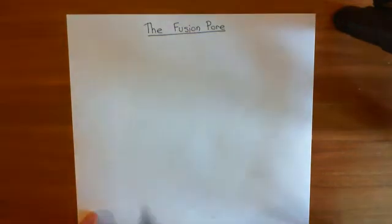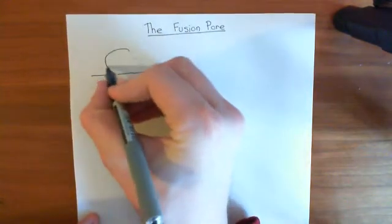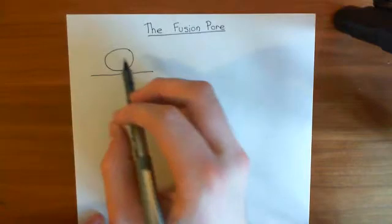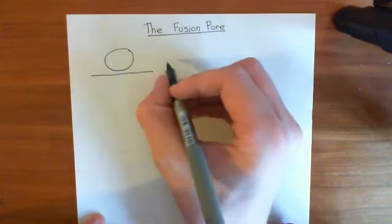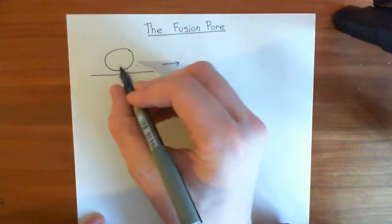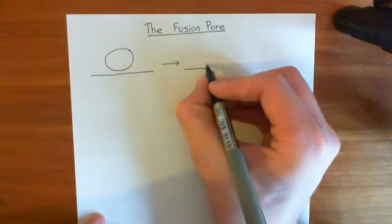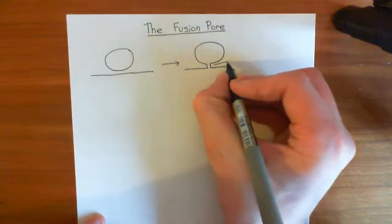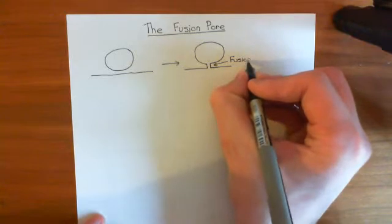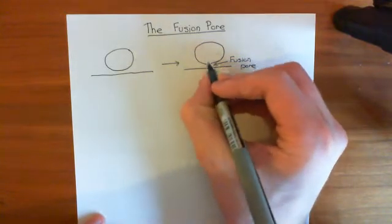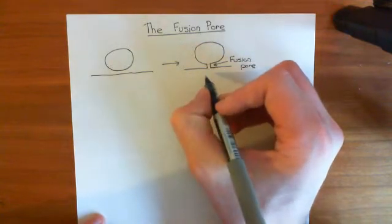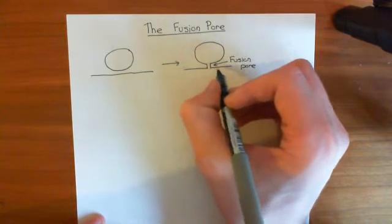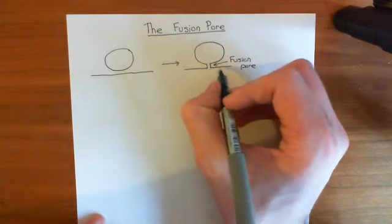So what is the fusion pore? We have our presynaptic membrane and a synaptic vesicle docked at the presynaptic membrane. When an action potential arrives in the axon terminal, it causes promotion of the fusion of this synaptic vesicle with the plasma membrane. What we believe happens first is that you form a little tube between the synaptic vesicle and the presynaptic membrane — this is known as the fusion pore. The fusion pore seems to allow movement of a little bit of neurotransmitter from the synaptic vesicle, and also allows merging of the two membranes.